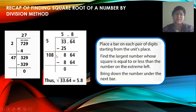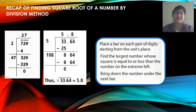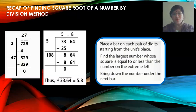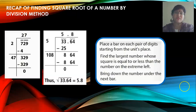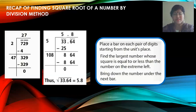Why are we learning the square root of a number by division method? Many times when you are solving problems based on Heron's formula, you get the area of the triangle in roots — you could get the answer as 20 root 3 or 80 root 6. Whether you leave the answer as is or solve it further depends on the question. If the question tells you to find the area in decimals, then you have to calculate further. So it is imperative that you know how to find the square root of a number by division method.